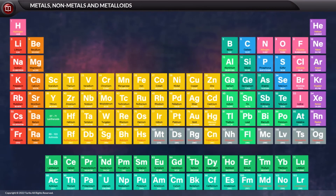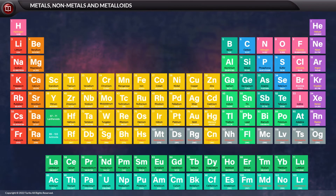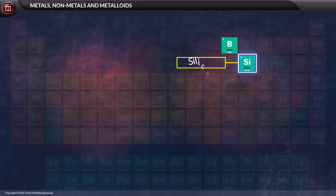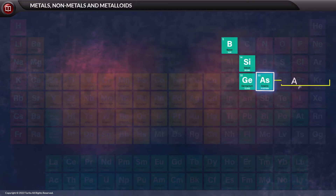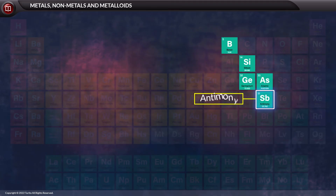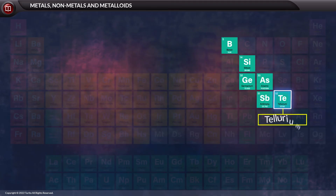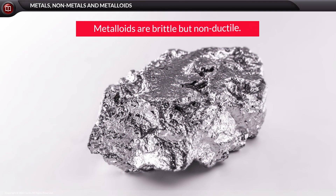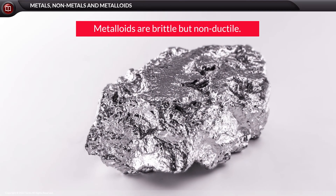The metalloids present in the periodic table are boron, silicon, germanium, arsenic, antimony, and tellurium. Metalloids are brittle but non-ductile.